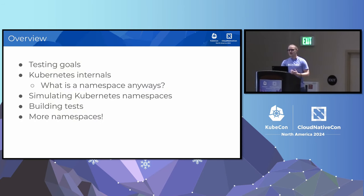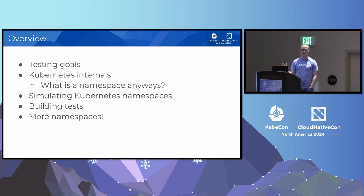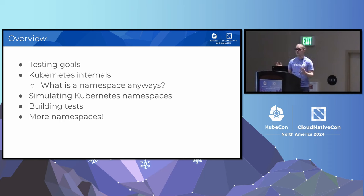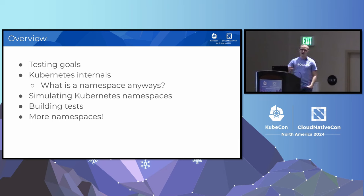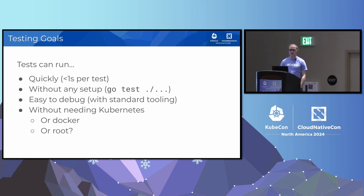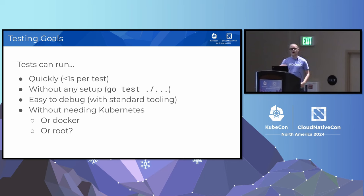I want to go over what I view as the ideal test and what I wanted to achieve. Ultimately, we want tests that can run quickly — a second per test, though ideally all tests run in one second. That's a great iteration time compared to the tens of minutes with Kubernetes-style tests. It'd also be great to have no special test setup so someone can come into the repo and just run `go test`. It'd also be great to be easy to debug with standard tooling — clicking the debug test button in the IDE, setting breakpoints. To meet those goals, we really need this to run without Kubernetes, without Docker, and potentially without root.